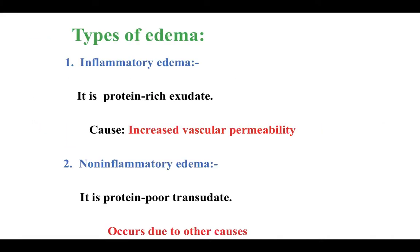There is inflammatory edema, which results from increased vascular permeability. When there is increased vascular permeability, proteins will exit the blood vessels — this results in exudate. Exudate is rich in protein and is caused by increased vascular permeability, resulting in inflammatory edema. In contrast, non-inflammatory edema involves no increased vascular permeability, producing transudate, which has little protein content.